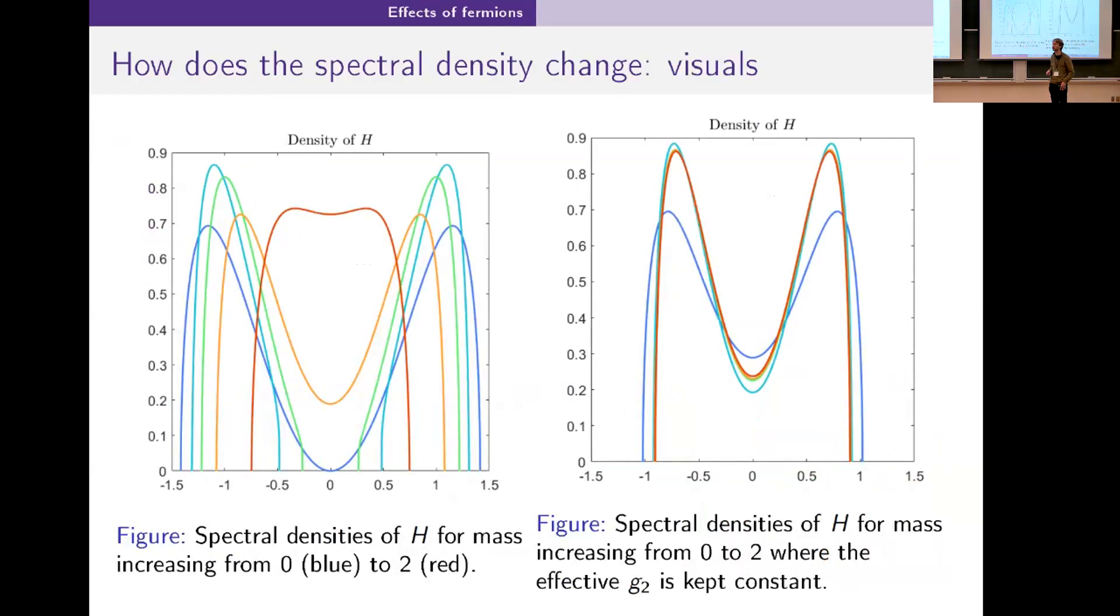What we've done here is we've plotted the spectral density for fixed g_4, fixed g_2, so a fixed polynomial but changing mass. The mass changes from zero which corresponds to this blue line here which is right at the phase transition between a single support and split support, up to the red line which is for a mass two.